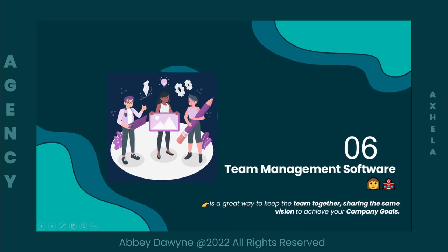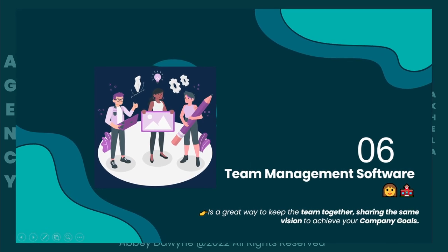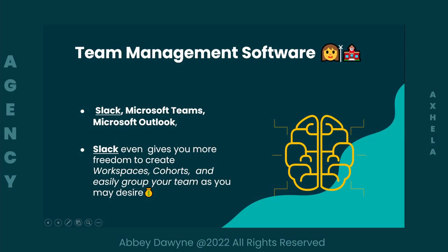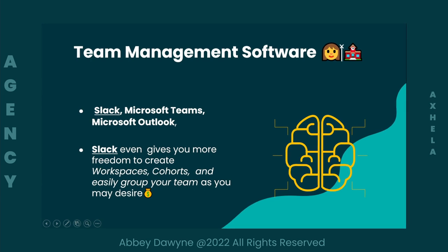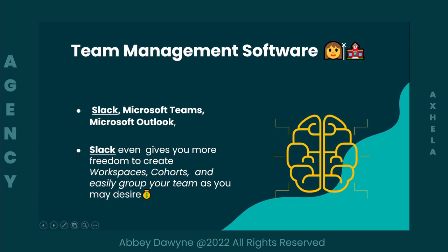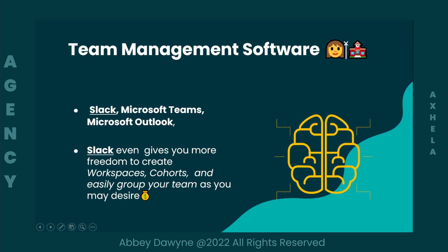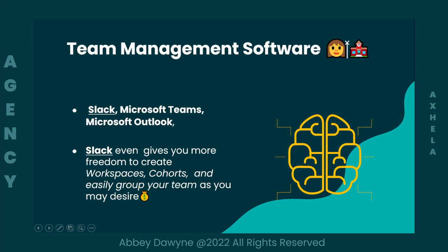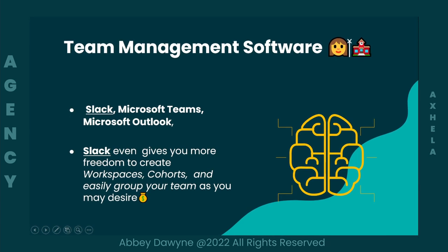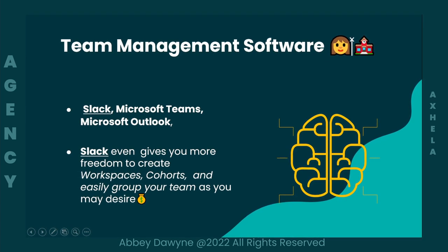Tool number six is team management software. It can be quite challenging when you run a big team to keep track of progress and keep communications streamlined. Tools like Slack, Microsoft Teams, and Microsoft Outlook are great ways to keep the team together, sharing the same vision and achieving company growth. Build a digital culture in your team — always check emails every morning and communicate everything by email for a professional and trackable record.